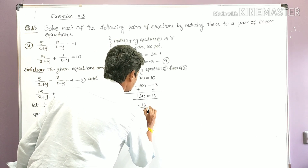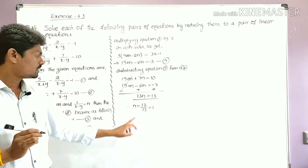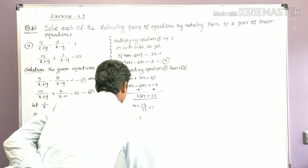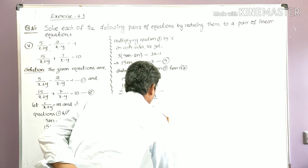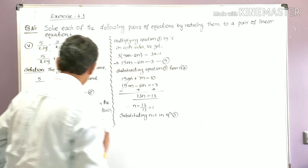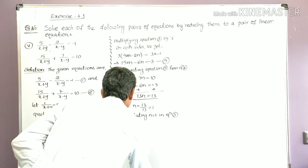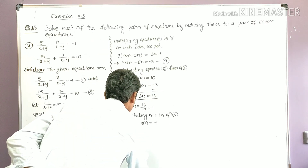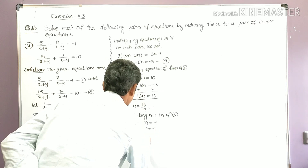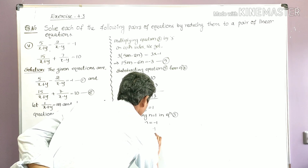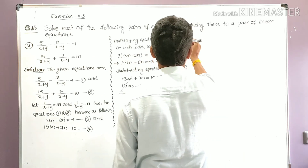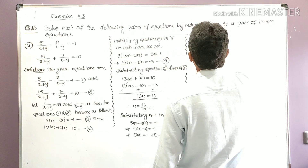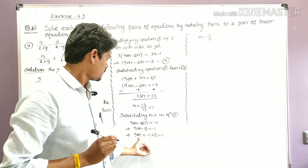Substituting n = 1 into Equation 3: 5m minus 2(1) equals −1, so 5m minus 2 equals −1. That implies 5m = −1 + 2 = 1, therefore m = 1/5.